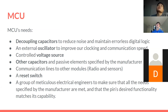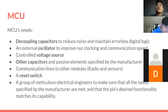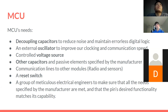Some things our MCU still requires include decoupling caps to reduce noise and maintain data accuracy, an external oscillator to improve communication speed and consistency, a controlled voltage source from our voltage regulator subcircuit, and other caps and passive elements specified in the MCU's data sheet — including all the values. We saw some teams have already started adding in components to their schematic as defined by the data sheet. We'll also need a reset switch which we'll go over in a moment.